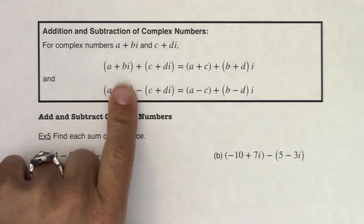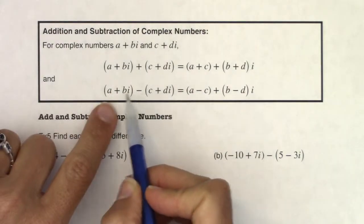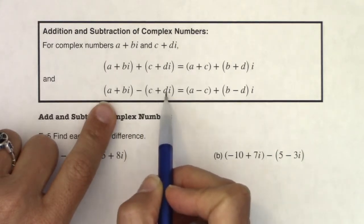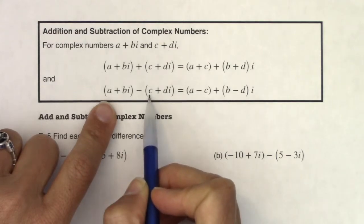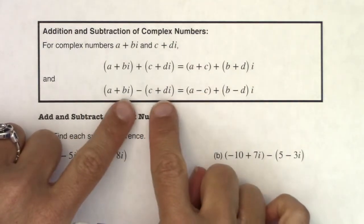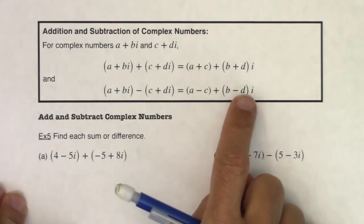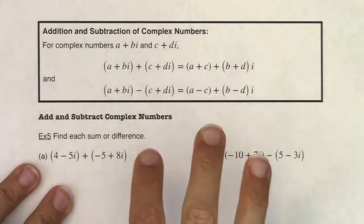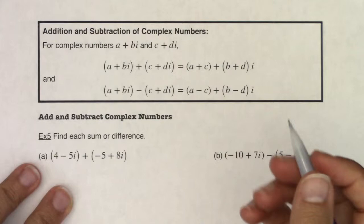And the same is going to be true if you're subtracting complex numbers. So here I have a plus bi minus, and in parentheses, be careful with that, c plus di. I need to remember to distribute the negative to the c as well as the di. But ultimately we subtract the real parts, and we subtract b minus d, and that's the coefficient in front of i. And you've seen this before with radicals or with any like terms. You may just not recognize it as much in this form because it looks a little funkier.